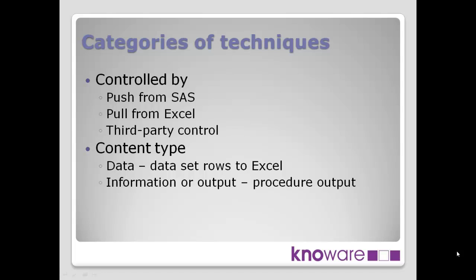The second way to categorize techniques is by content type — what sort of data is being moved from SAS to Excel. One type is data: a SAS table with its rows and columns, moving that data from the SAS table through to Excel. The second type is moving information or output — the result of some SAS processing, typically procedure output. You may have a PROC regression, PROC print, or PROC tabulate, and it's the result of that SAS procedure that goes through to Excel.